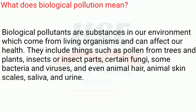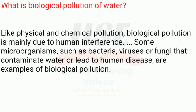What does biological pollution mean? Biological pollutants are substances in our environment which come from living organisms and can affect our health. They include things such as pollen from trees and plants, insects or insect parts, certain fungi, some bacteria and viruses, and even animal hair, animal skin scales, saliva, and urine.